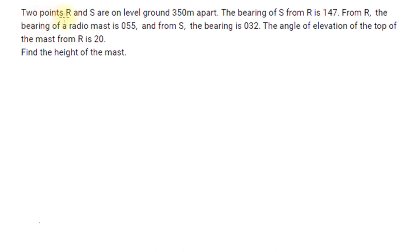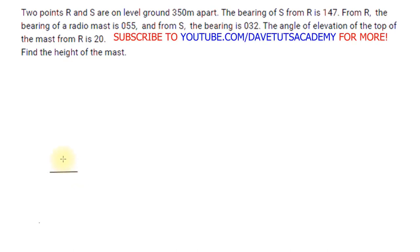First, we're told that the two points are on level ground, 350 meters apart. The bearing of S from R is 147 degrees. The bearing being from R means that we'll take that bearing from R. So if we look at the location R, let me just take the four cardinal points — north, south, east, and west — and this is point R.